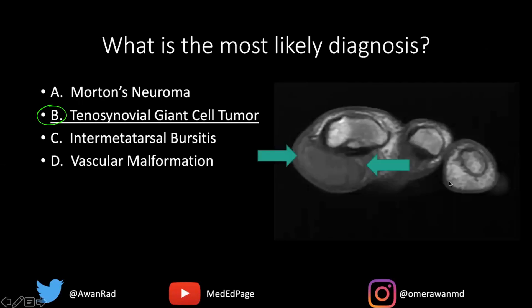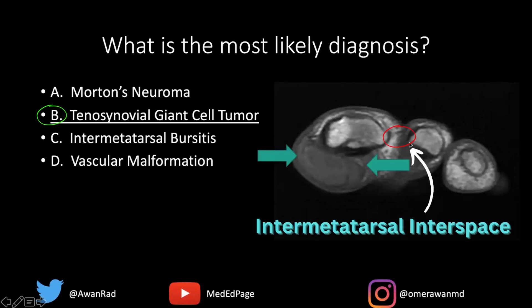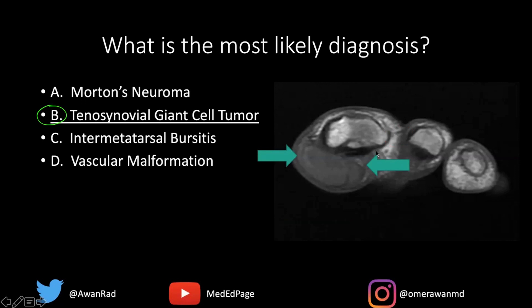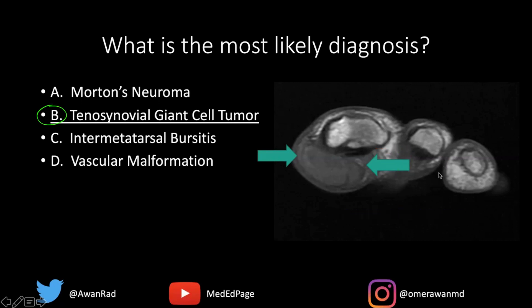This is not a Morton's neuroma, because Morton's neuroma would be in the intermetatarsal interspace — in the space between the metatarsals. Furthermore, it would be plantar to the intermetatarsal ligament. If we draw an imaginary line between the flexor tendons of one digit to the flexor tendons of another, Morton's neuroma would be plantar to that ligament.